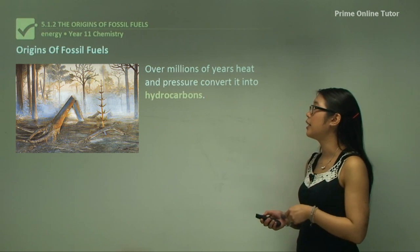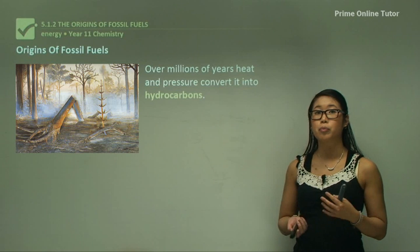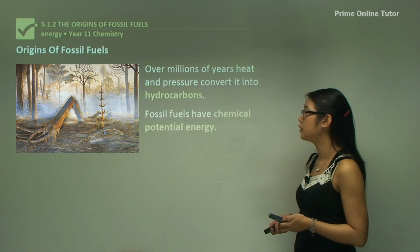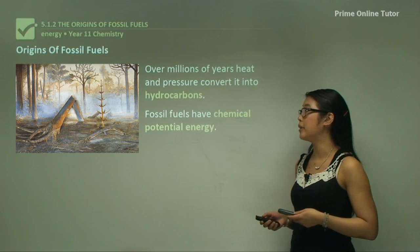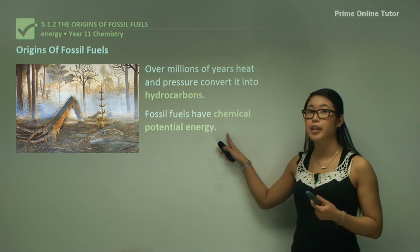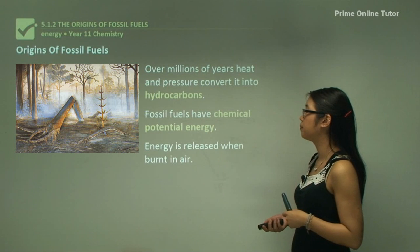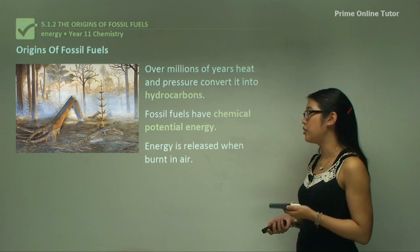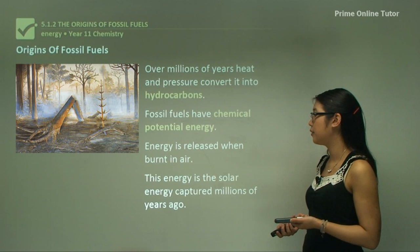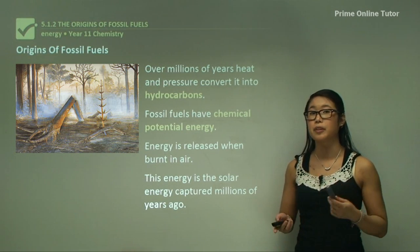Over millions of years heat and pressure convert these plants and animal remains into hydrocarbons. Fossil fuels have chemical potential energy, meaning there's stored energy in the molecules. Energy is released when it's burnt in the air, usually in the form of heat. This energy is the solar energy captured millions of years ago from the Sun.